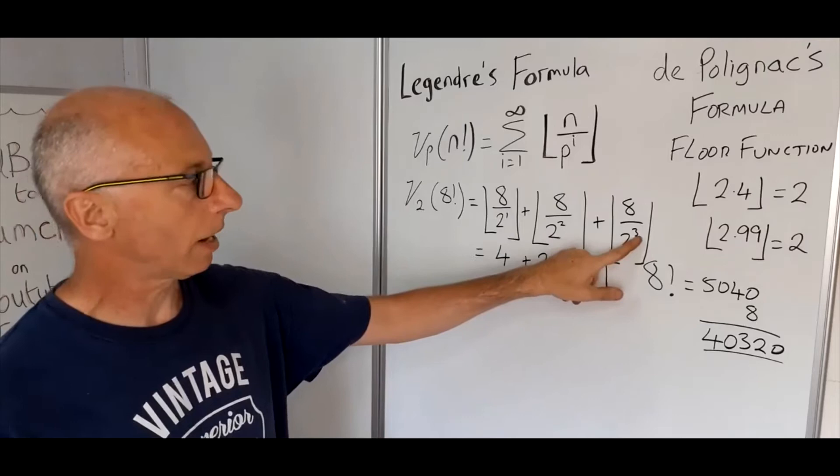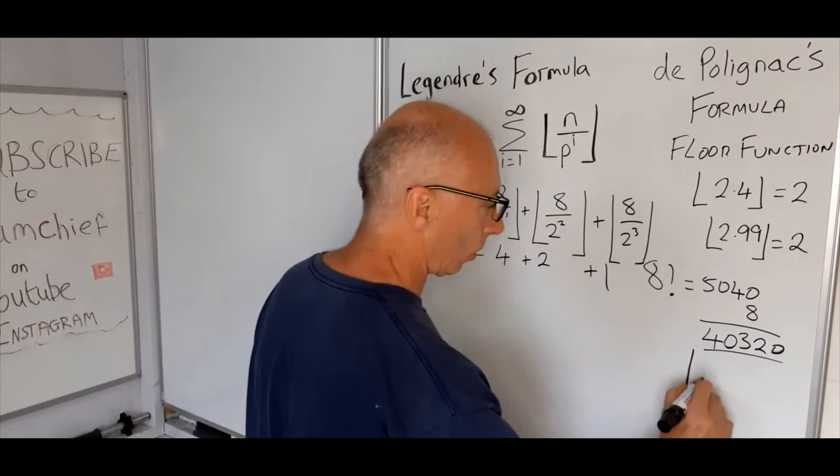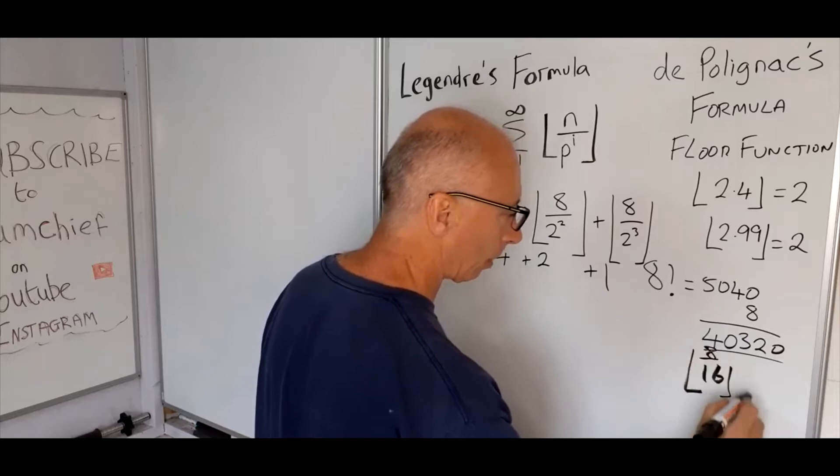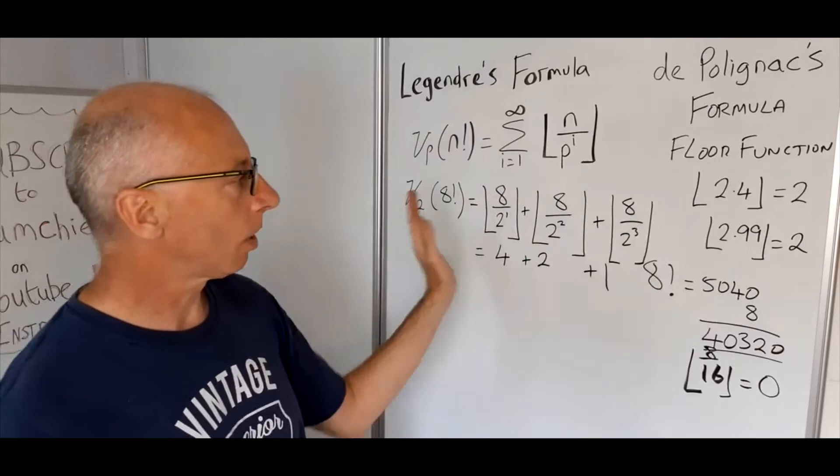And then we keep going. Now we've got 8 over 2 to the power of 3. 8 divided by 8 is going to be 1, so the floor of 1 is just 1. Now do we need to go any further? Well, just to see that, 2 to the power of 4 is 16, 8 divided by 16, the floor of 8 divided by 16 equals 0. So all the rest of these numbers are going to be 0, so we don't need to continue anymore.